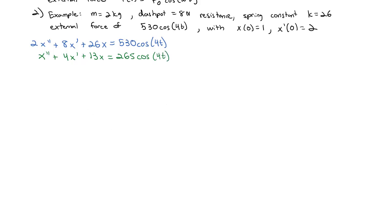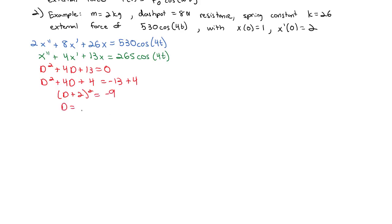To find the complementary solution, we look at the homogeneous case: d² + 4d + 13 = 0. We can't factor, so we complete the square — subtracting 13 and adding (4/2)² = 4 to both sides gives (d + 2)² = −9. Taking the square root and subtracting 2 yields d = −2 ± 3i. So xc = e^(−2t)(c₁ cos 3t + c₂ sin 3t).